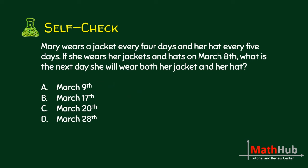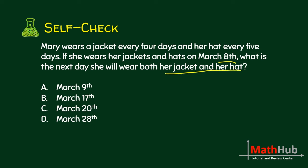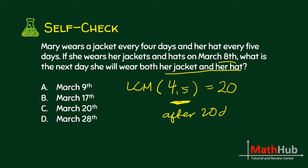Mary wears a jacket every 4 days and her hat every 5 days. If she wears both on March 8th, what is the next day she will wear both? This is an LCM problem — find the LCM of 4 and 5, which is 20. So after 20 days, she will wear her jacket and hat again. March 8th plus 20 days is March 28th. The answer is letter D.